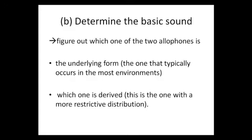We need to figure out which one of the two allophones is the underlying form. This is the one that typically occurs in the most environments. And which one is derived. This is the one with the more restrictive distribution. So, which form is derived from the other? The answer to this question is that the phoneme of which they are allophones is known by the allophone that has the least restricted distribution. In the majority of cases, the form that occurs in a larger number of phonological contexts can be taken to represent the underlying form. And the form that is restricted in its occurrence to particular contexts is most likely to be a derived form.